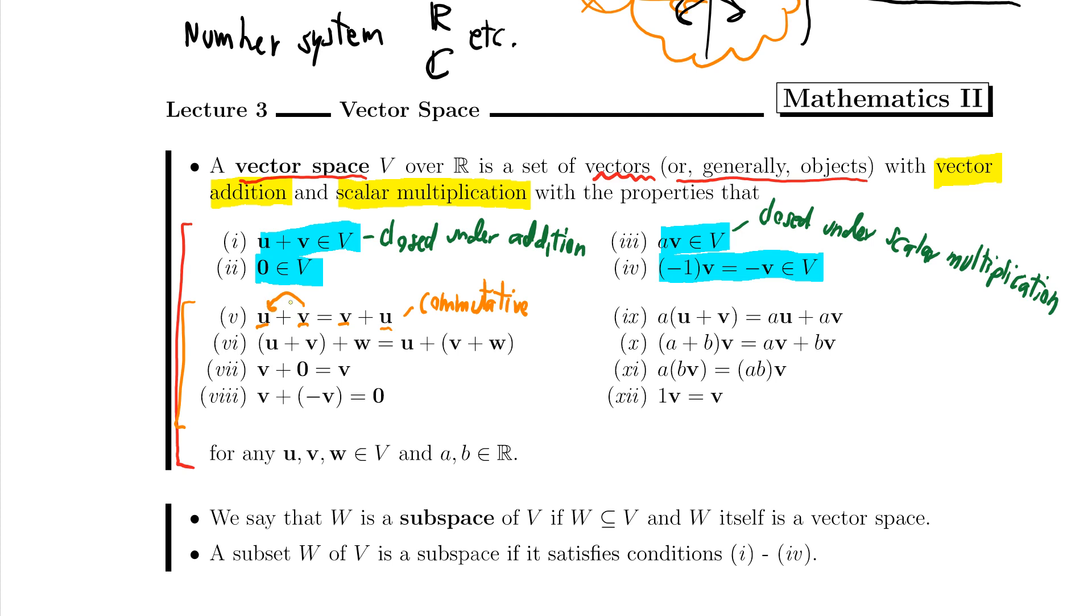So I can swap the order of the addition and that should work fine. The next one, if I want to add u and v and w, it should not matter the order in which I do it. If I add u and v first and then add w to that, or if I add v and w first and then add u to that, the final product should be the same thing. This is called associative.